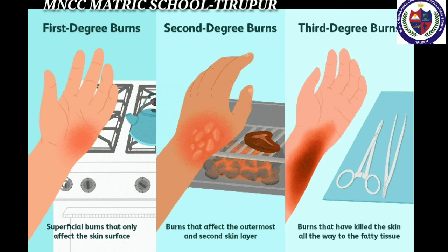Next topic is burns. The tissue damage caused by heat, chemical, electricity, sunlight, or nuclear radiation is known as burns. There are three types of burns according to degree. First degree burns affect only the outer layer of the skin. Second degree burns damage the epidermis and the layer beneath it. Third degree burns involve damage or complete destruction of the skin to its full depth and damage to underlying tissues.